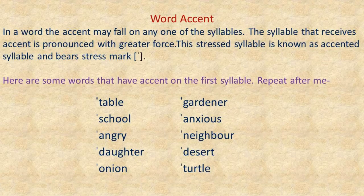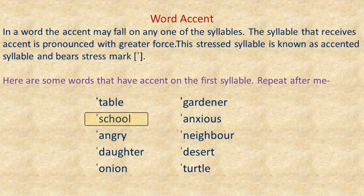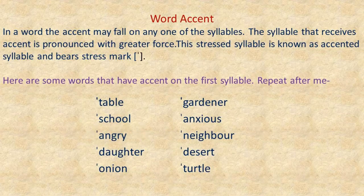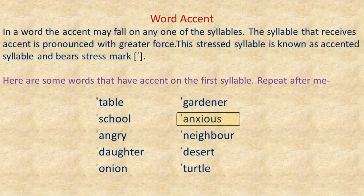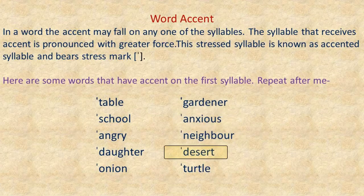Once again, let's repeat these words: table, school, angry, daughter, onion, gardener, anxious, neighbor, desert, turtle.